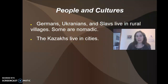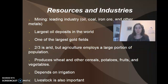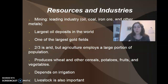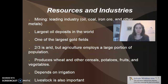The Germans, Ukrainians, and Slavs tend to live in rural villages, whereas the Kazakhs live in cities. Kazakhstan has positive industries — it has oil, coal, iron ore, and other metals, including the largest oil deposits in the world and some of the largest gold fields. Two-thirds of the land is used in agriculture, which employs a large portion of the population. They produce wheat and other cereals, potatoes, fruits, and vegetables, all dependent on irrigation. They also have livestock.